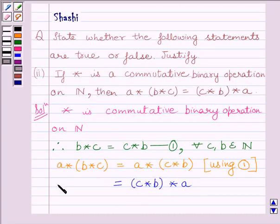So we get a star bracket b star c is equal to bracket c star b close bracket star a.